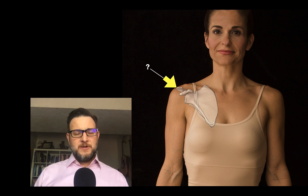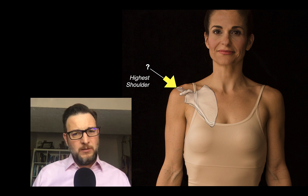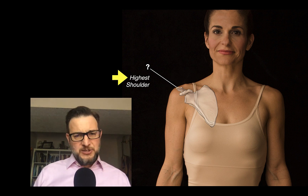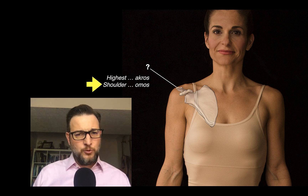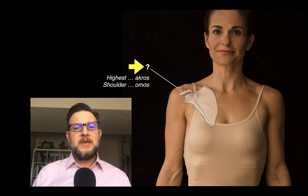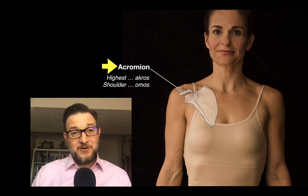Here we have an anterior view of that structure. Anatomists asked: what do we call that structure? Well, it's the highest point of the shoulder. And so they asked, what is the word for highest? In Greek, it's 'akros.' And what is the word for shoulder? It's 'omos.' So they called it the acromion — the highest point of the shoulder — just like the Acropolis.